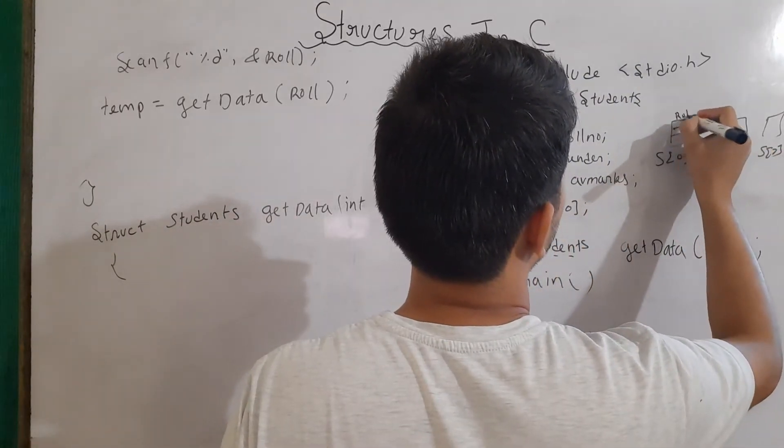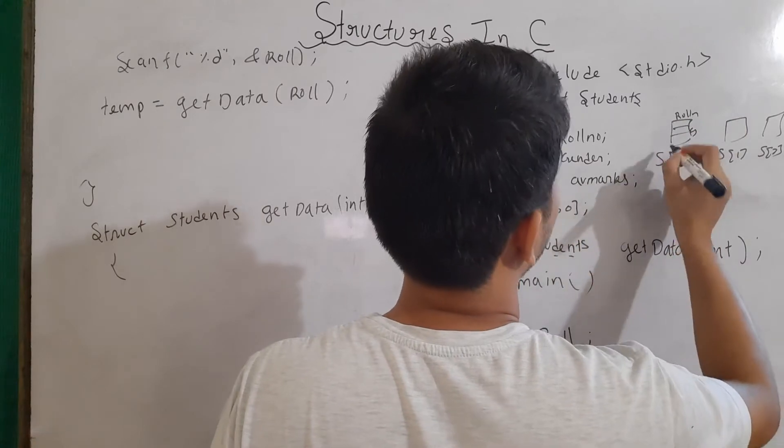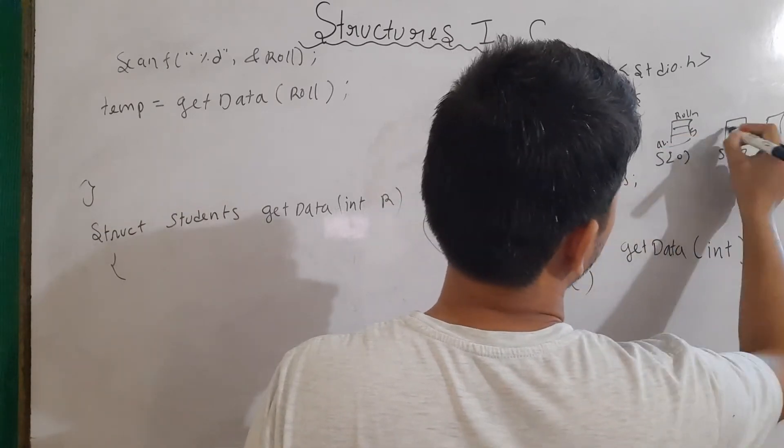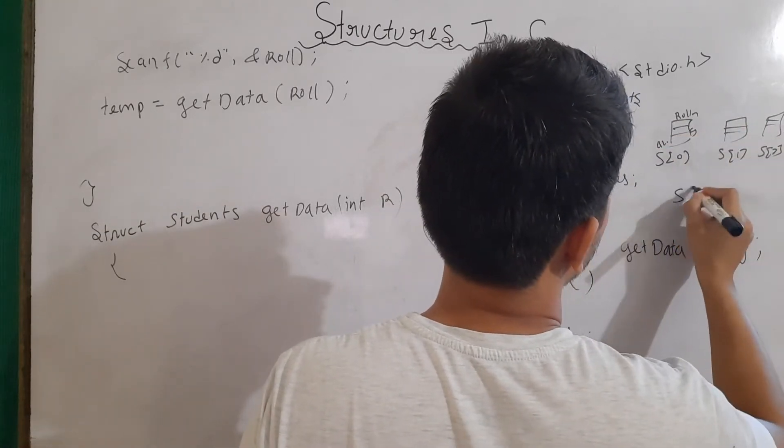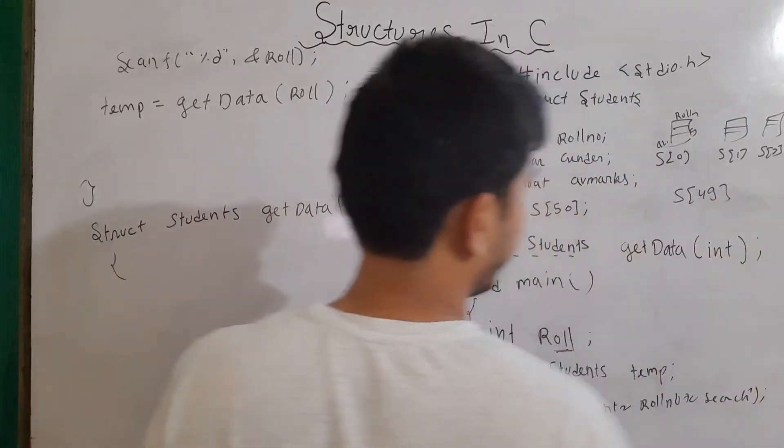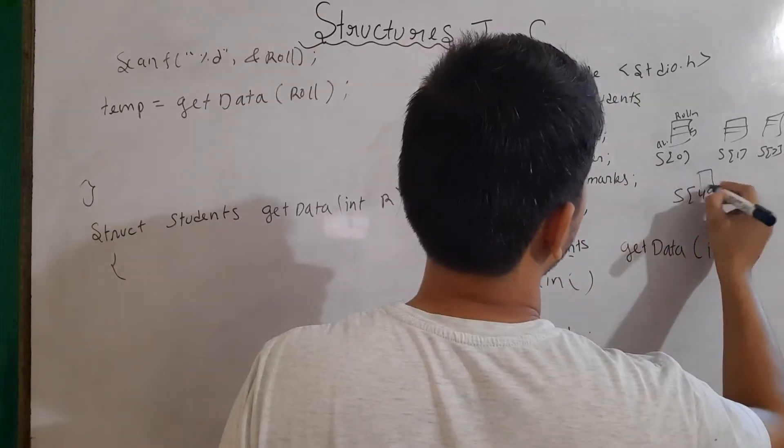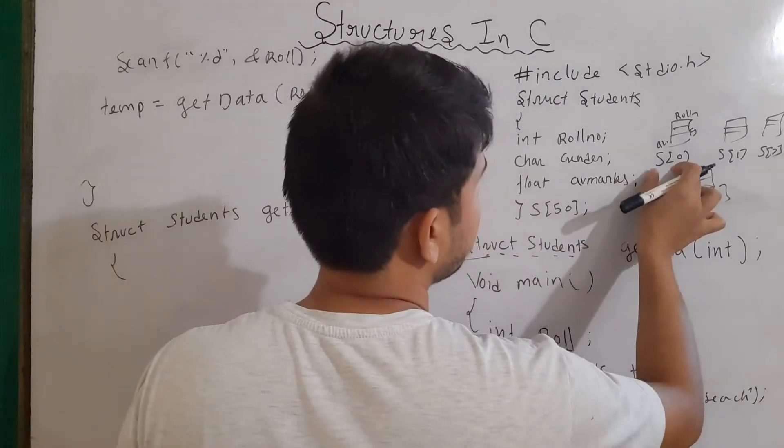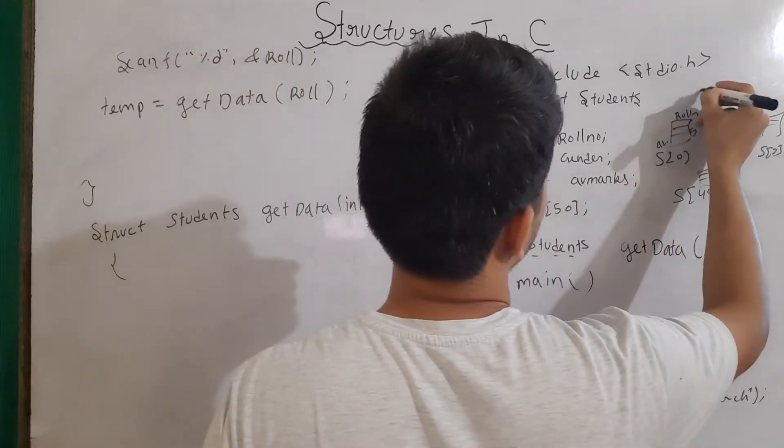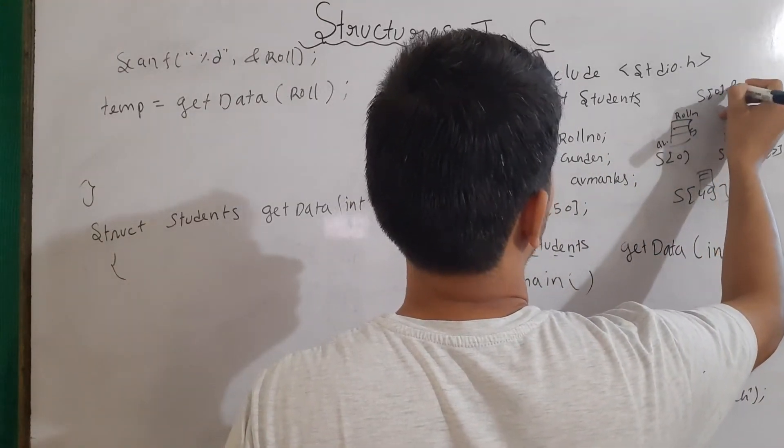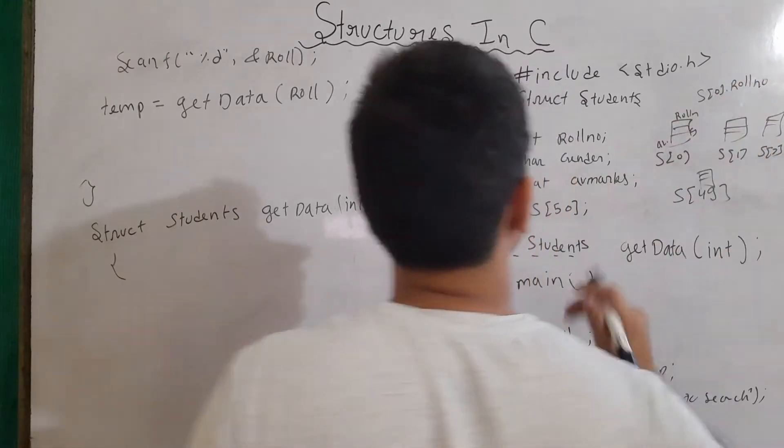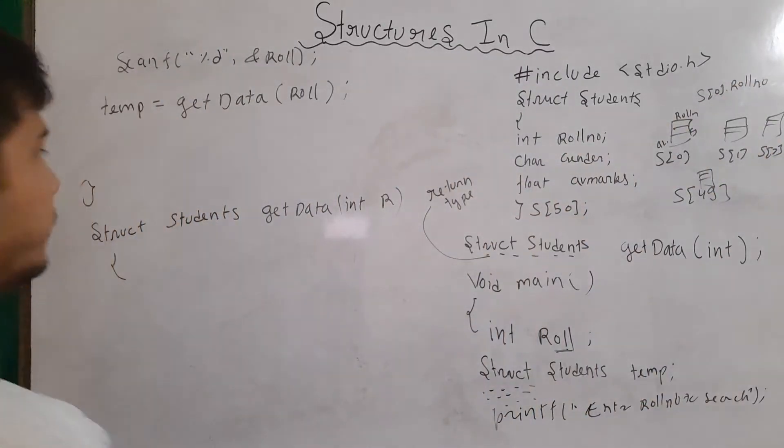For better understanding, let's say this is s0, then s1, then s2. And each is having its role number, gender, and av marks. This also, this also, and s49, up to s49. All are having the data. Now, to access role number for first student, I have to write s0 dot role number. We have talked about this in previous videos also.